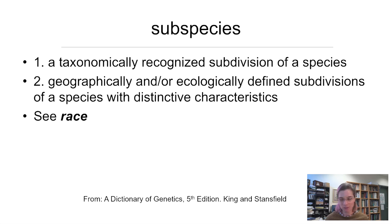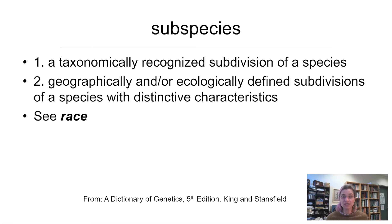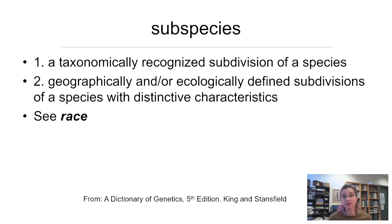Do you remember that term — polytypic? It is a particularly useful concept in evolutionary biology. A species that is polytypic, that has multiple subspecies, has clear, distinct subdivisions that generally result from geographic or environmental isolation. Let's look at an example.